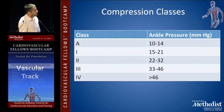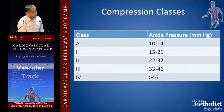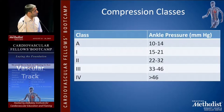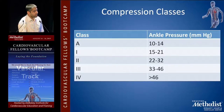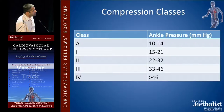Based on your CEAP classification, you can determine what pressure you need at the ankle. Class A is 10 to 14 mmHg. As you move up in disease severity, you have to start increasing pressure. Obviously, as you increase pressure, you probably reduce compliance.